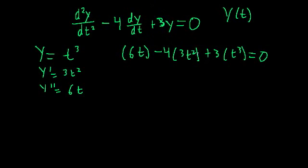In order to find a function that satisfies this, we need a function whose derivative terms somewhat resemble the actual function, so that when we add them all together, they cancel out. Out of all functions, the exponential function has the property that its derivative is itself. So it should be a really good candidate to find something that cancels with its higher derivatives.